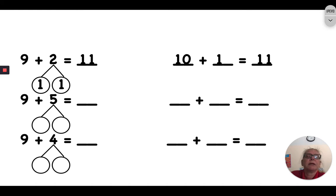Nine plus five. Let's break that apart. I can break it into one and four. I'm going to give the one to the nine to make ten, which means I have four left over. Ten plus four. So ten plus four is fourteen, just like nine plus five is fourteen.